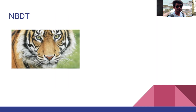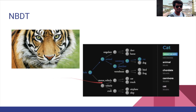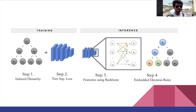For example, for a tiger image, instead of just outputting 'tiger,' the NBDT says it is an animal, then a carnivore, and then identifies it as a tiger — which is in the family of cats. This intermediate reasoning is very important in fields like medical imaging and finance.